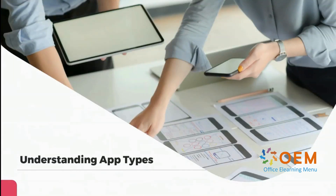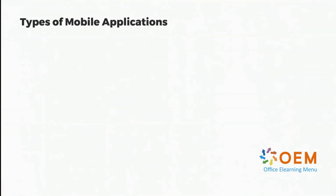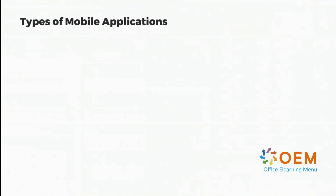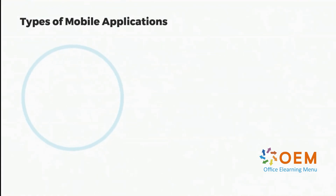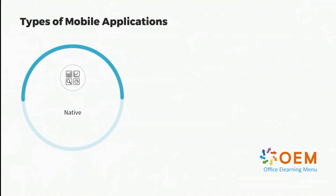In this video we are going to cover the major app types. When we are talking about the types of mobile applications, we have three major types. First is native applications.